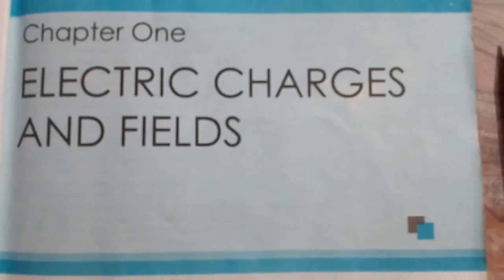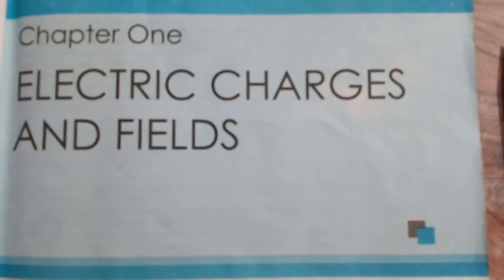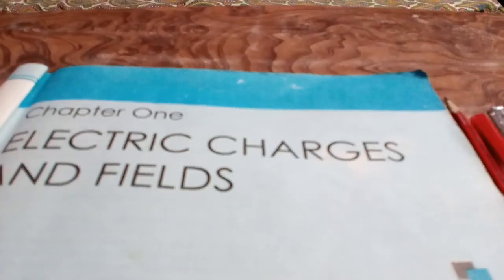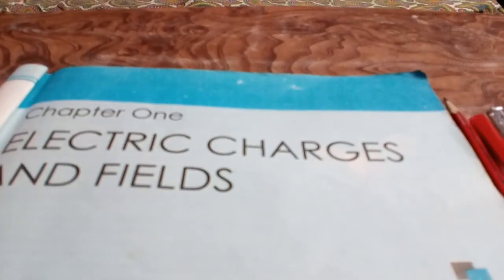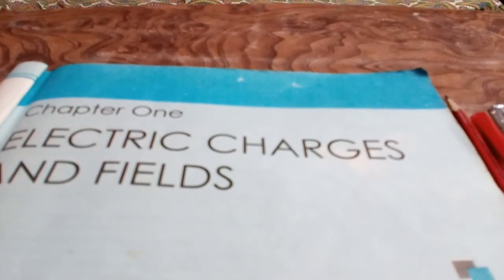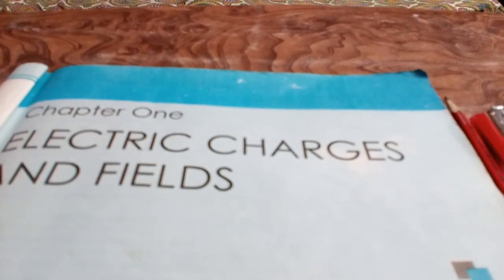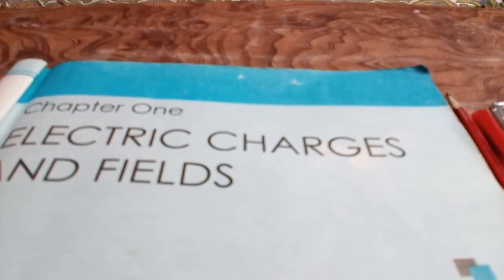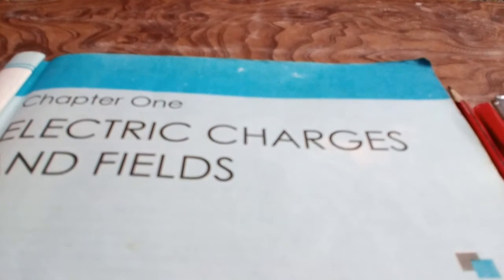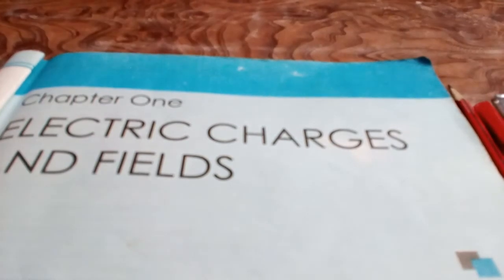This is chapter 1, Electric Charges and Fields. Students, you might have seen lightning during thunderstorms in rainy season. Lightning is electric discharge through gases. Air charge accumulated in clouds discharge through air. This is movement of charge.